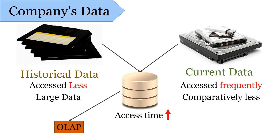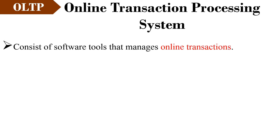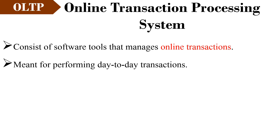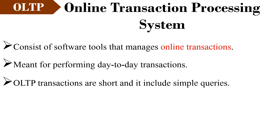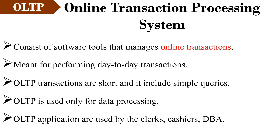We have implemented OLAP to deal with historical data and OLTP to deal with current data. OLTP, that is Online Transaction Processing, is an operational system that enables execution of a large number of database transactions over the internet. OLTP is implemented to handle day-to-day operations involving simple transactions such as insert, delete, and modify. OLTP is used only for processing data and is used by clerks, cashiers, DBAs, etc.